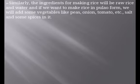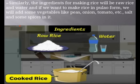Similarly, the ingredients for making rice are only two: raw rice and water. We can make cooked rice using only these two ingredients. But if we want to make pulao — vegetable pulao, vegetable biryani, or tahari — we add vegetables like peas, onion, tomato, salt, and spices along with raw rice and water. The ingredients for cooked rice are shown in this picture.